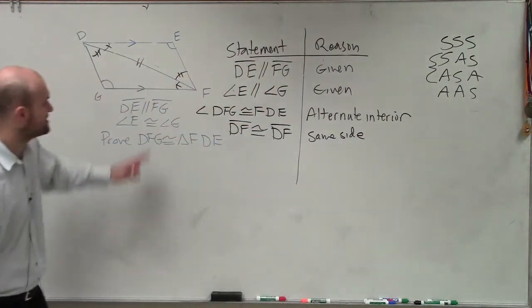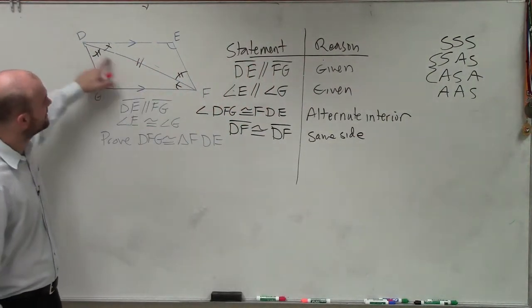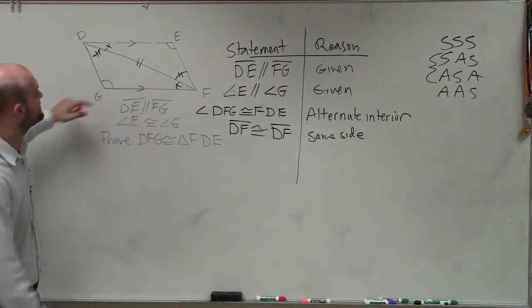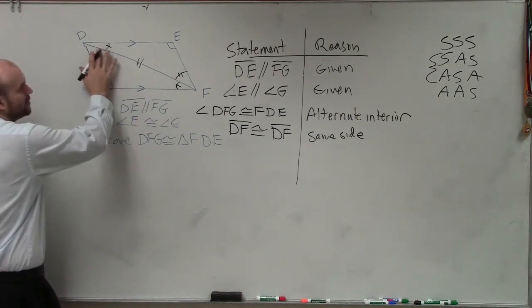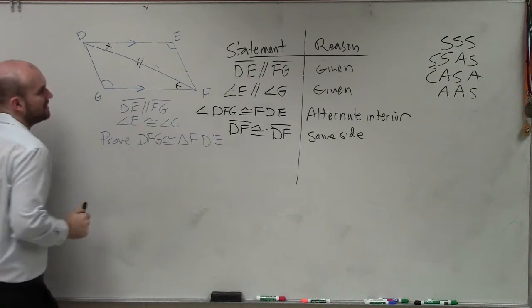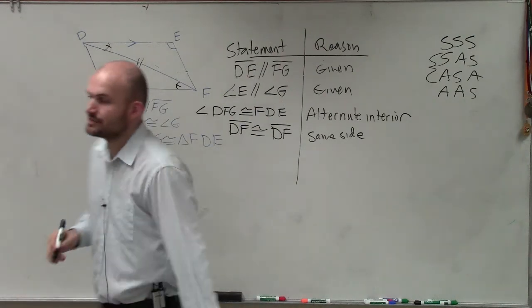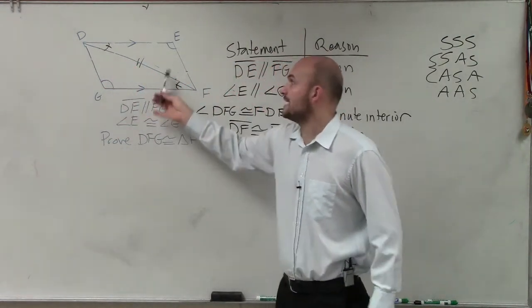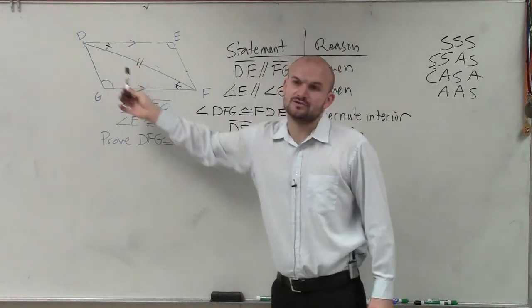All right, now since I only proved that DFG is congruent to FDE, I'm going to kind of erase these, even though we know we could prove them. But now what I want you guys to see is based on these triangles, I can prove congruence by angle, angle, side.